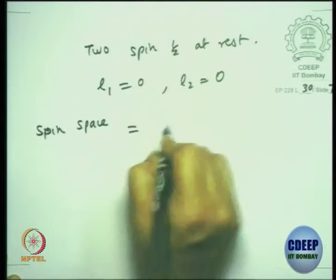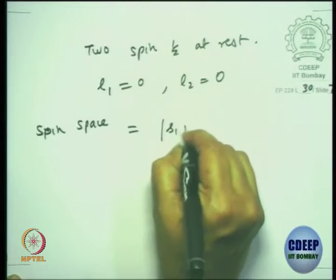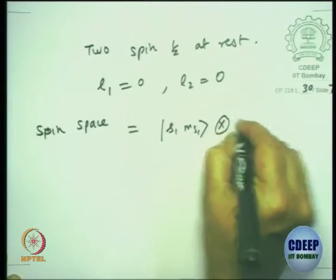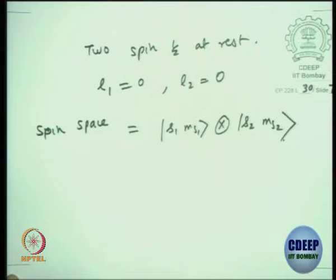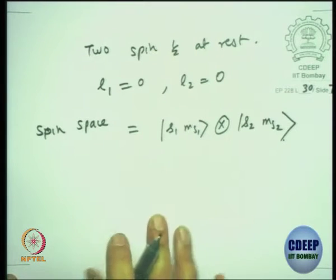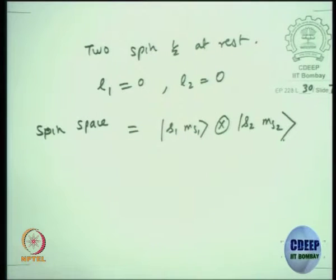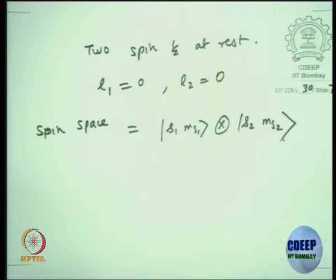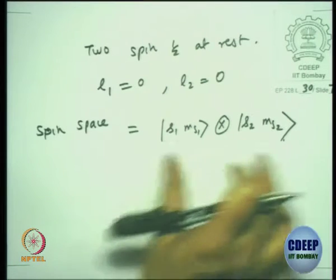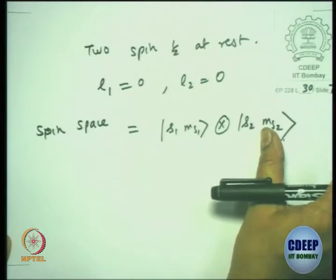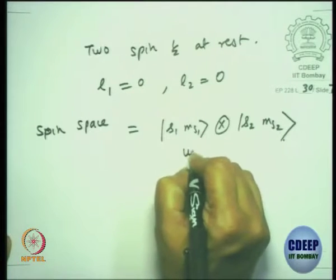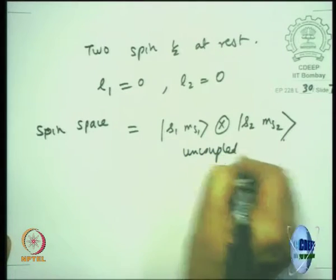You can write it as a direct product space of |S1, MS1⟩ ⊗ |S2, MS2⟩. I have suppressed the orbital quantum number just for simplification. This space is called the uncoupled basis.